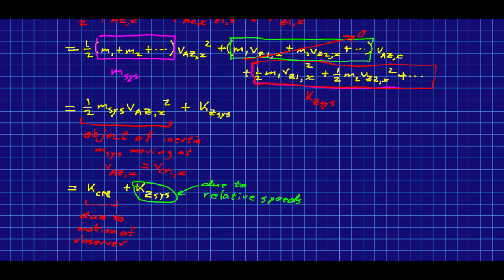Whereas, this piece is really to do with the motion of the observer relative to the system. So, in other words, this piece here is the only part that is available to be converted into internal energy.